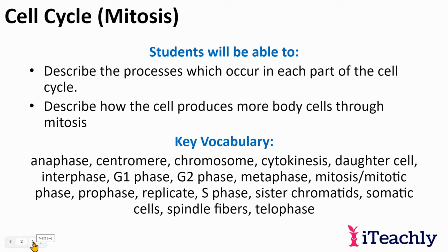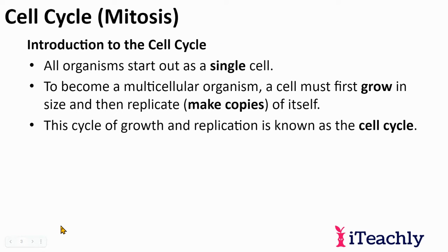Mitosis is basically asexual reproduction — no sex involved. It's just making more of yourself. You do this every day. You started out as an egg and then you copied yourself, and so you are now millions of cells. Every time you replicate a cell, you are actually making an exact copy of yourself. You don't want any mutations or anything in the DNA.